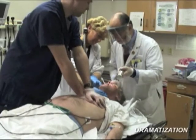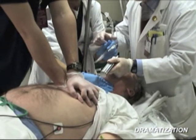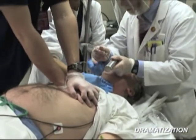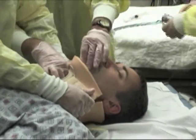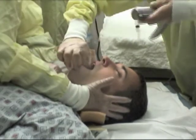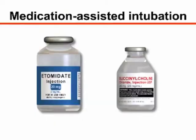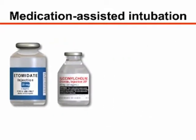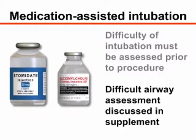In emergent cases, such as cardiac arrest, airway management is of paramount importance and there are very few contraindications to orotracheal intubation. Unstable cervical spine injury is not a contraindication, but intubation must be performed with strict in-line stabilization of the cervical spine. If neuromuscular blocking agents or sedatives are used to facilitate intubation, the difficulty of intubation must be assessed and planned for before proceeding. This assessment is discussed in more detail in the accompanying written supplement.